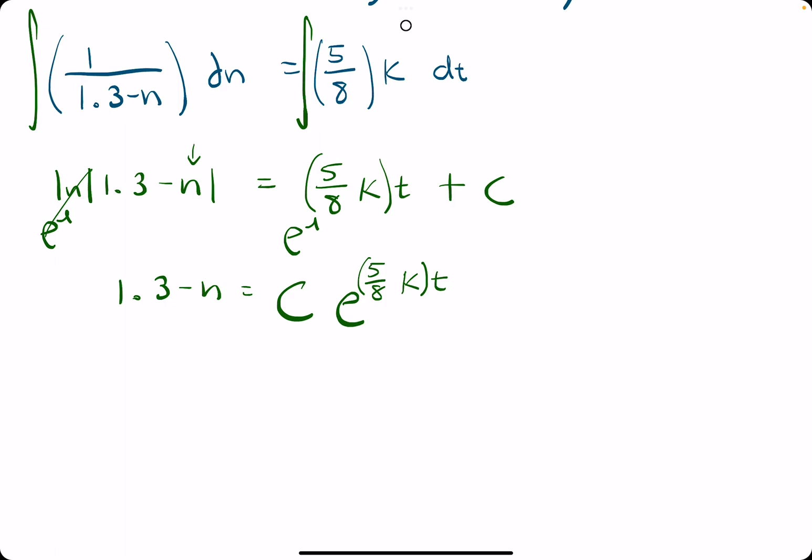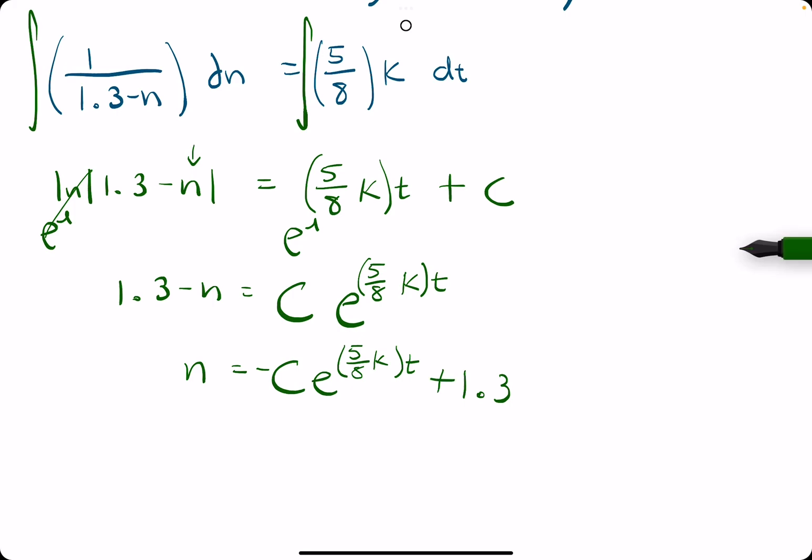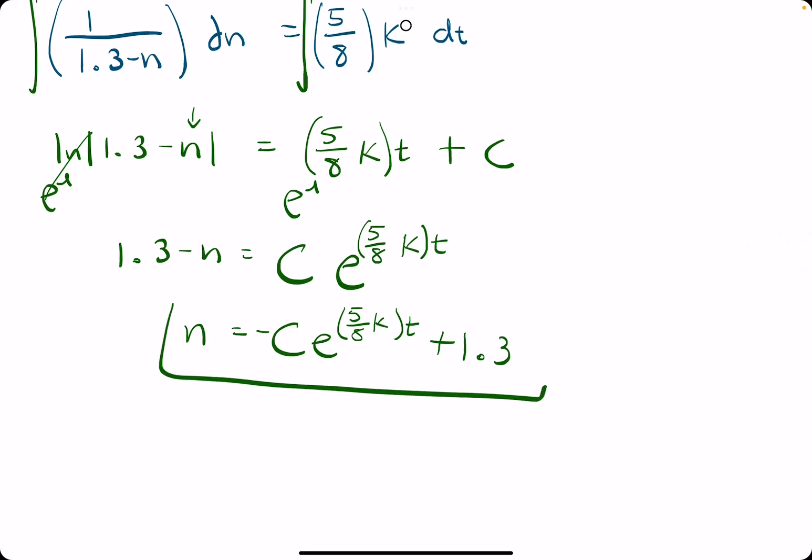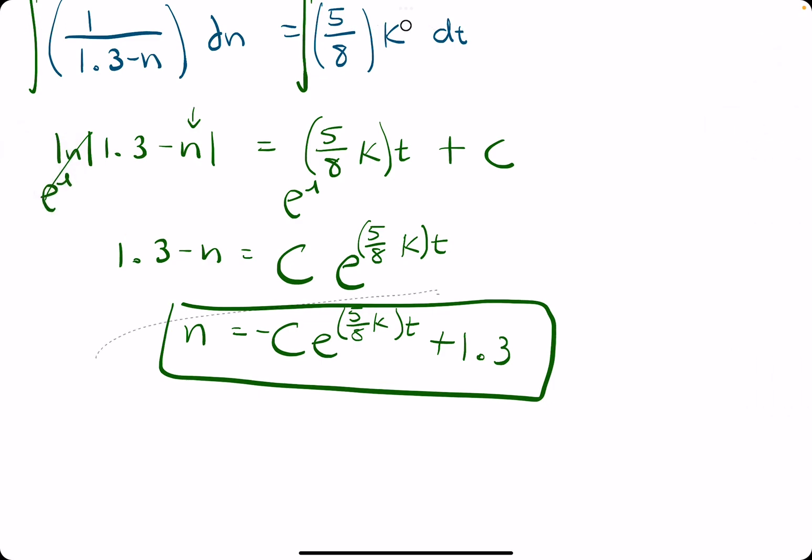And then we can solve for n by subtracting 1.3, and then dividing by a negative. So, negating the whole thing makes the c negative out in front, and then we have a plus 1.3 now. This is our general solution. This is what we will reference in the next few steps.